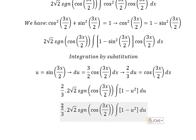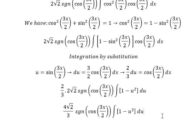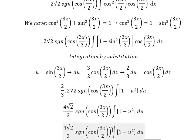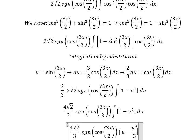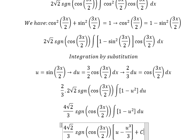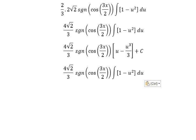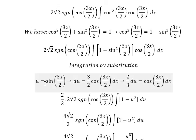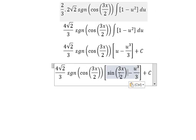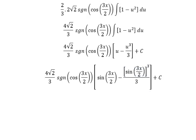Combining the 2s gives us 4, so we have 4 over 3. The integration of 1 gives u, and the integration of u squared gives u to the power of 3 over 3. We add the constant C. Substituting back, u equals sine of 3x over 2. This is the end. Thank you for watching.